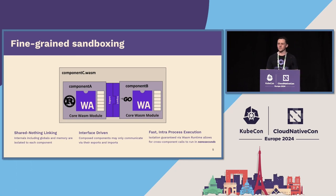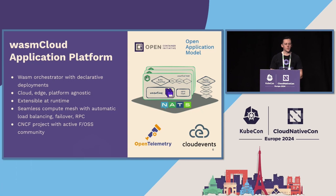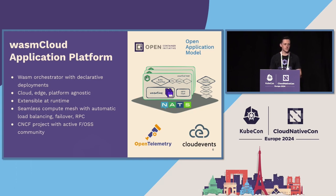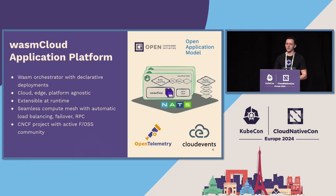So to get into what the WasmCloud project is: it is both a platform and we have associated tools like an orchestrator for declarative deployments. It's completely cloud, edge, and platform agnostic — just a binary that you can run on Linux, Mac, or Windows. We distribute a container and can run in Kubernetes. It's really important for us as an app platform to not be tightly tied to a specific cloud or specific platform. You can extend it with your own capabilities in addition to the common ones like HTTP servers and blob stores. Under the hood, we use another CNCF project called NATS for all of our networking and RPC back and forth between components at runtime.